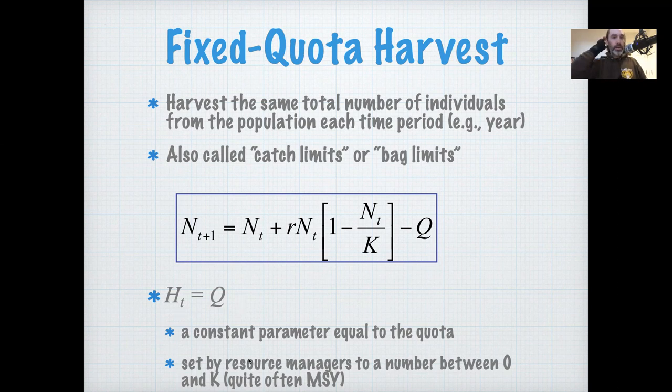So the harvest is a constant equal to quota, and needs to be set by resource managers to a number between zero and K. You can't harvest more than 100% of the population, and it's often set to the maximum sustainable yield. You can see there would be a strong incentive for many managers to set this quota closer to the maximum sustainable yield.